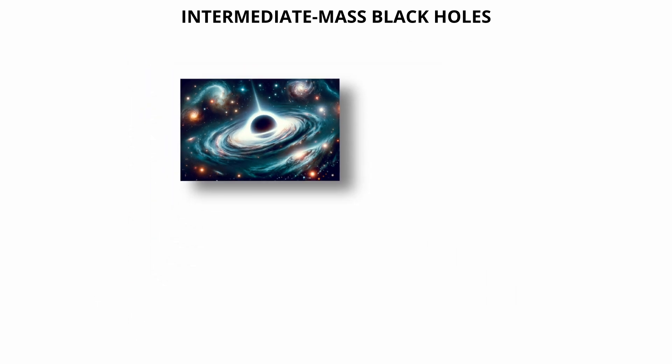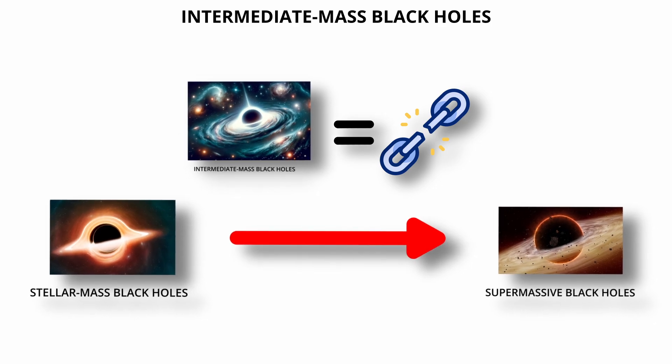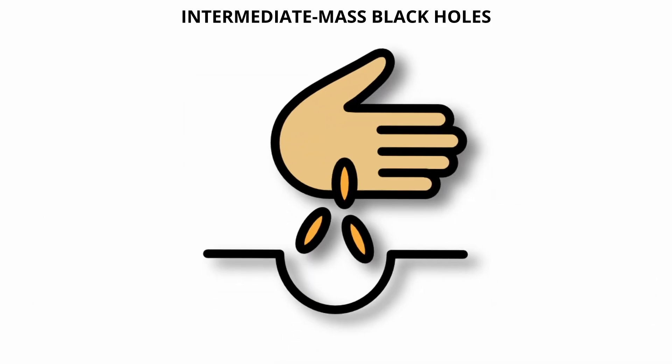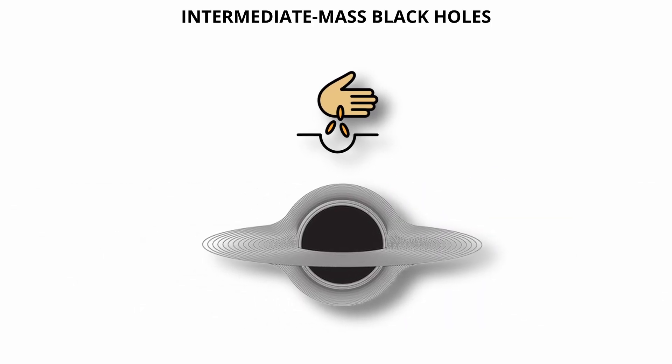Intermediate-mass black holes may also serve as a missing link in the evolutionary chain between stellar black holes and supermassive ones. They could play a role in seeding the centers of galaxies, eventually growing into supermassive black holes through further mergers and accretion.